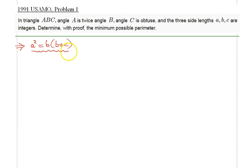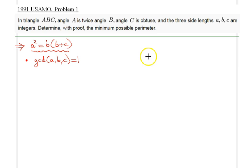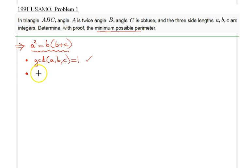Now a couple of observations. First, the greatest common divisor of A, B, C must equal one; otherwise we could divide all sides by their GCD to get a smaller valid triangle, contradicting minimality of the perimeter. Second, looking at A squared equals B times (B plus C), we have a perfect square on the left, so I claim B must itself be a perfect square.